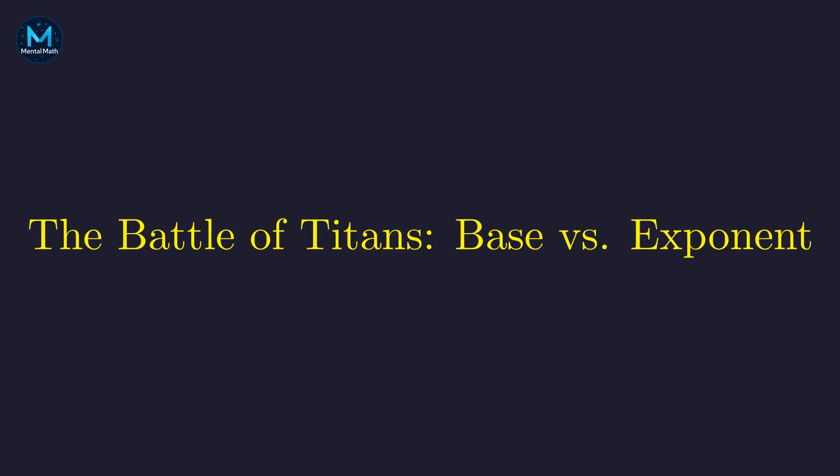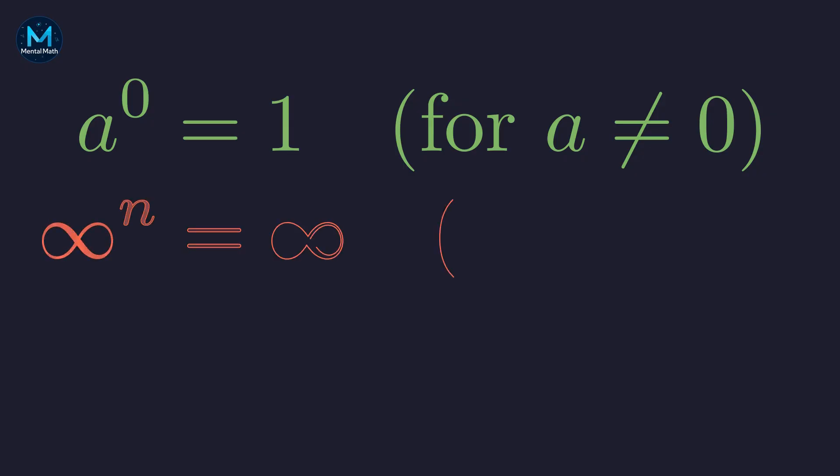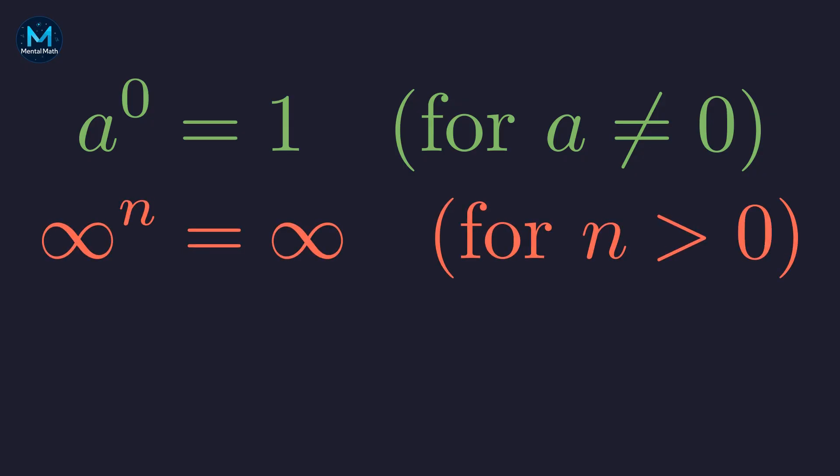Think of this as a mathematical tug of war with two fundamental rules pulling in opposite directions. First, there's the rule that any non-zero number raised to the power of zero gives you one — so our answer leans toward one. But then there's the property that infinity raised to any positive power stays infinity, pushing us toward infinity instead.